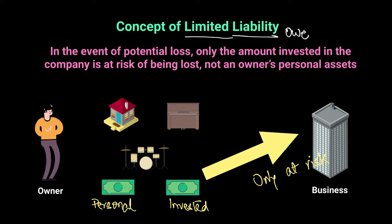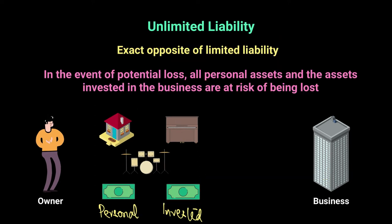Not all businesses have limited liability as an option. Of the four types we discussed — sole trader, partnership, limited companies, and cooperatives — sole trader and partnership have the exact opposite: unlimited liability.